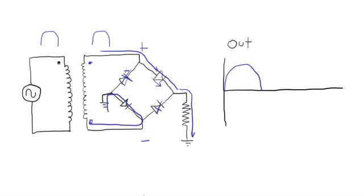The only thing to note about that positive alternation getting through is that this peak value here, vpeak out, is actually going to be